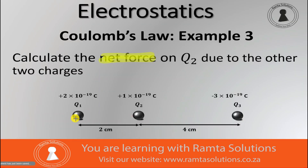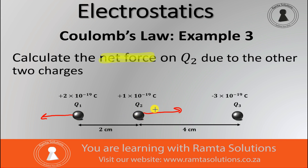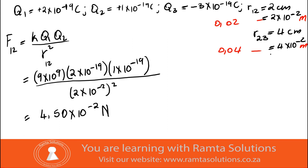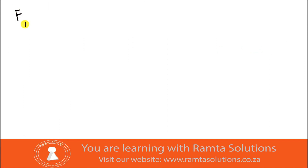Now, pay attention to the direction. These are like charges — both positive — so they repel each other. That means q1 is pushed to the left and q2 is pushed to the right. So the force on q2 due to q1 is directed to the right because they are repelling each other.